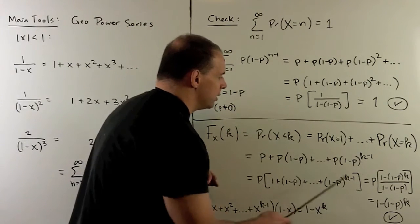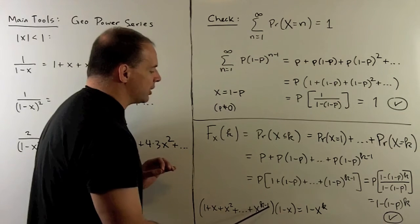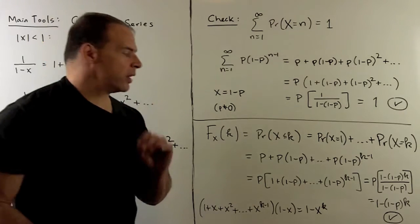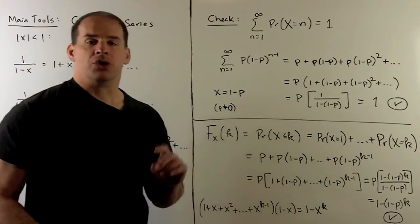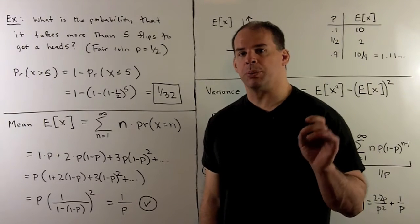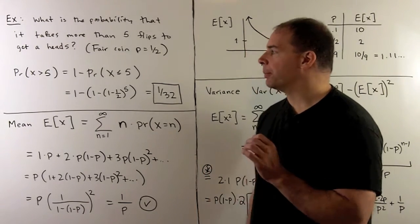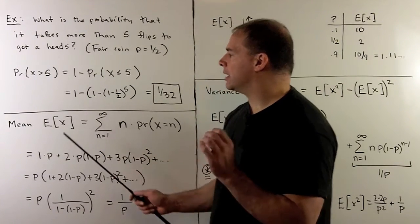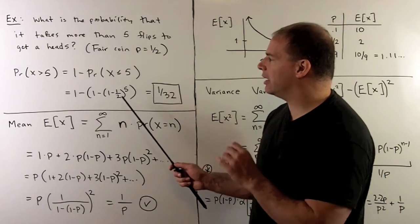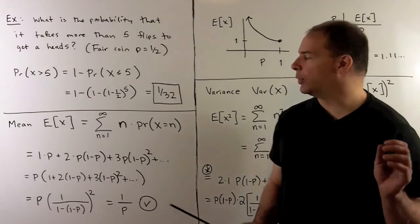For this substitution, we take the finite sum 1 plus X plus X squared up through X to the K minus 1, multiply by (1 minus X), all the middle terms cancel in pairs, and we're left with 1 minus X to the K — then divide both sides by (1 minus X). As an example, suppose we have a fair coin. What's the probability that it takes more than five flips to get a heads? We're looking for P(X > 5) = 1 minus P(X ≤ 5) = 1 minus [1 minus (1/2)^5] = 1/32.